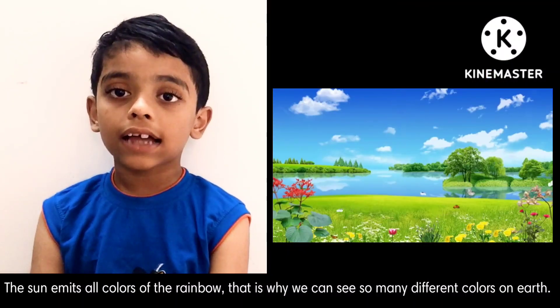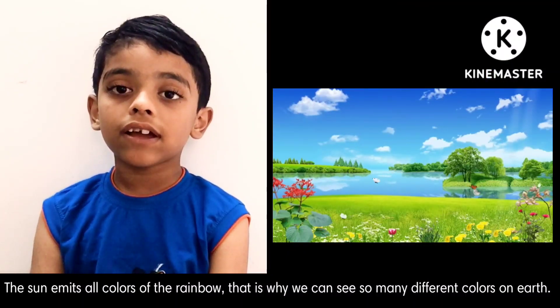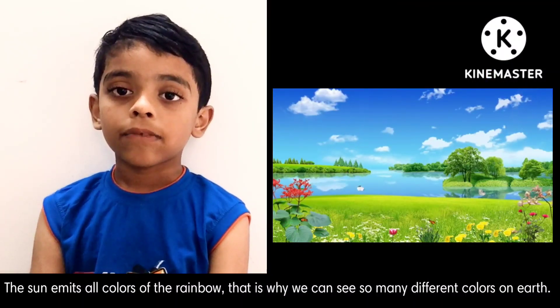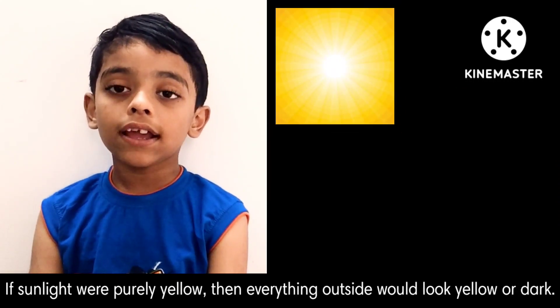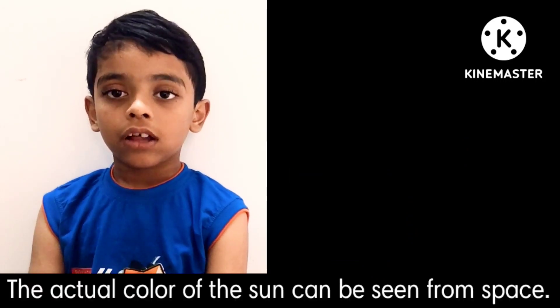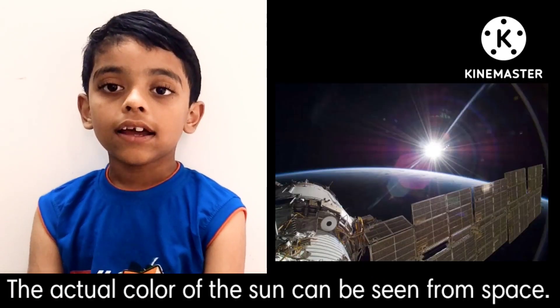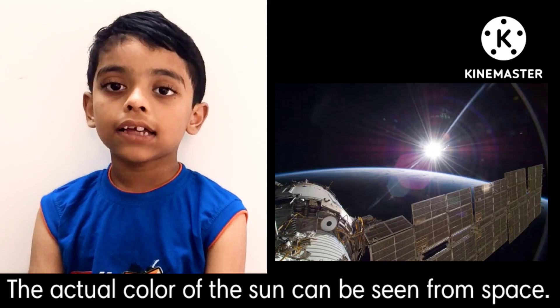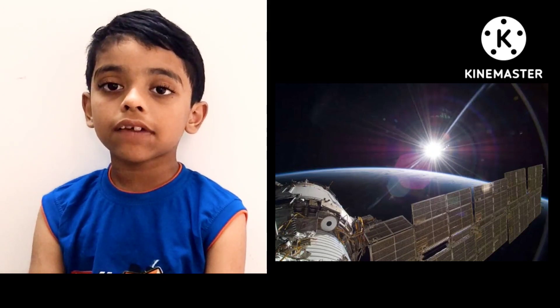The Sun emits all colors of the rainbow. That is why we can see so many different colors on Earth. If sunlight were purely yellow, then everything on fire would look yellow or dark. The actual color of the Sun can be seen from space, which is clear in the given picture.